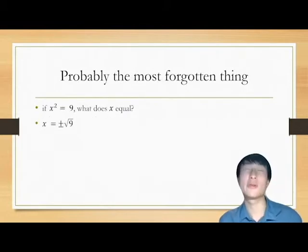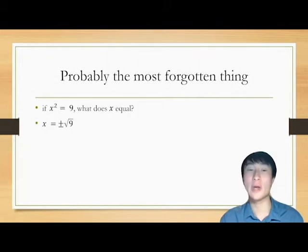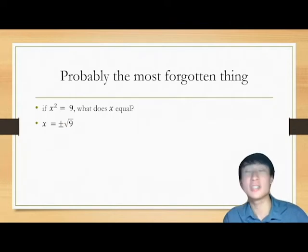Firstly, this is probably the most forgotten thing. If x squared equals 9, what does x equal? And the answer is x equals plus or minus root 9, which is plus 3 or negative 3. After you work out that it is positive and negative 3, potentially you might exclude a solution, but still don't miss this step.